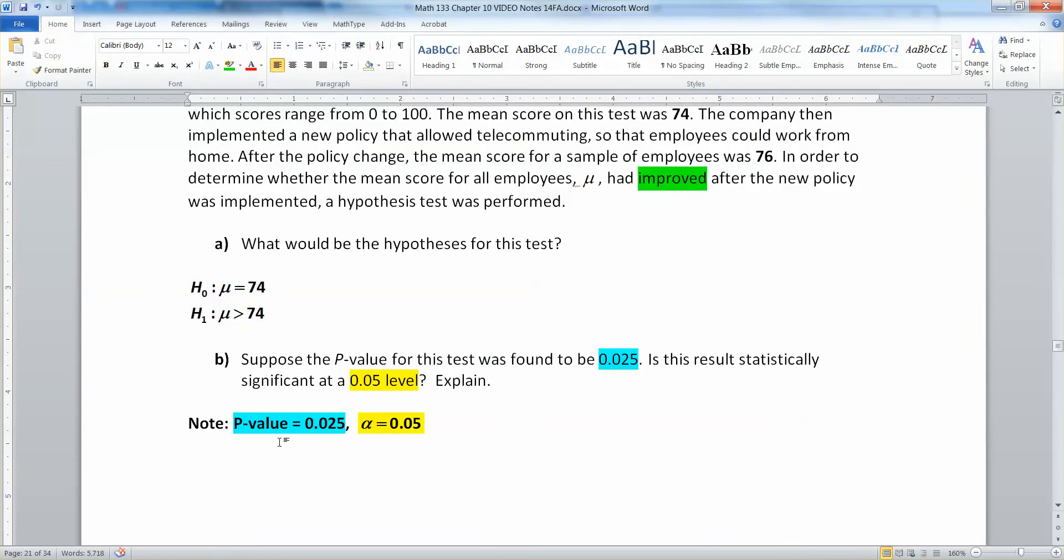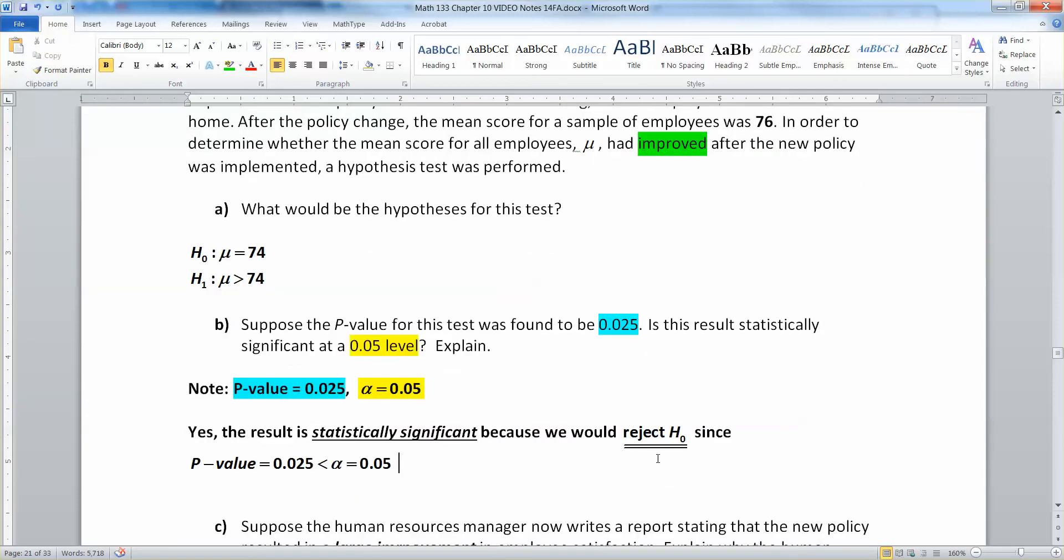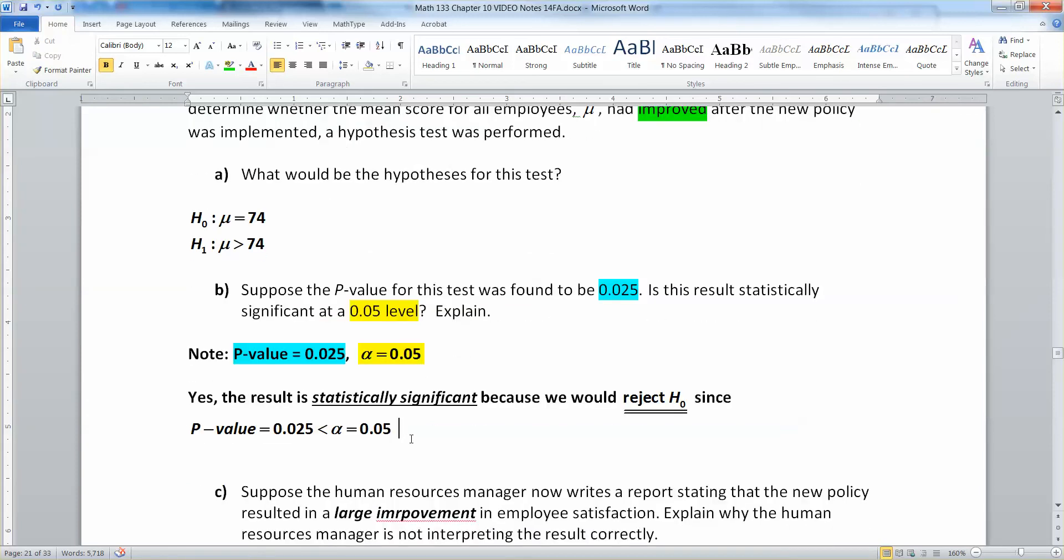So our p-value is less than alpha, so the answer is yes. This result would be statistically significant because we would reject the null hypothesis since the p-value of 0.025 is less than your alpha. Rejection of your null hypothesis is what makes it statistically significant.